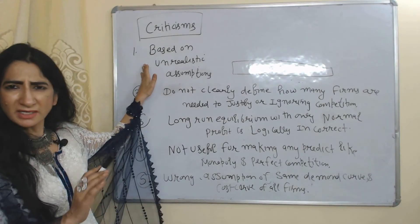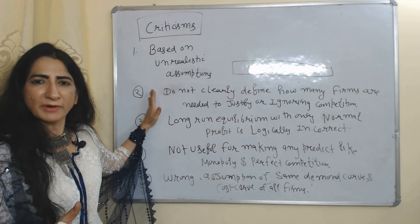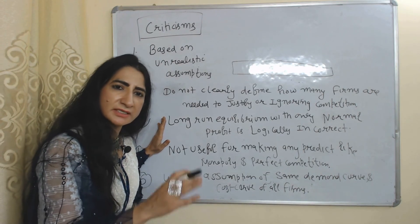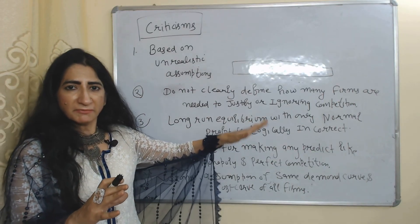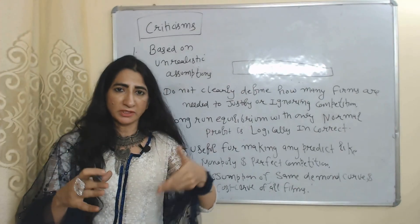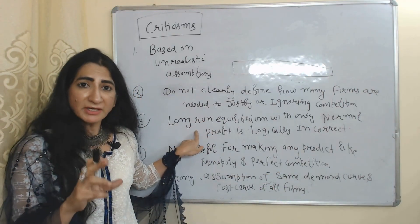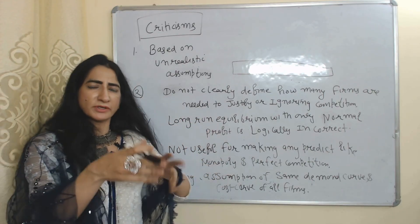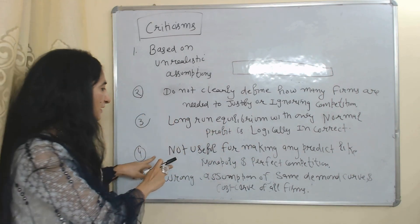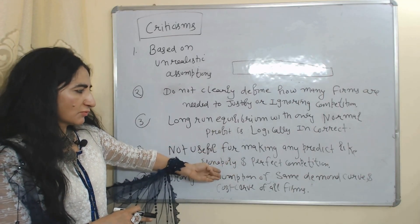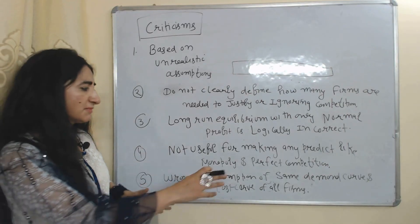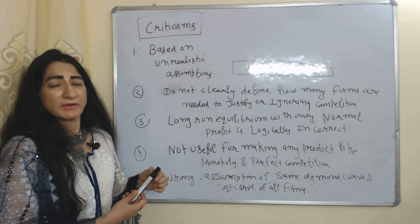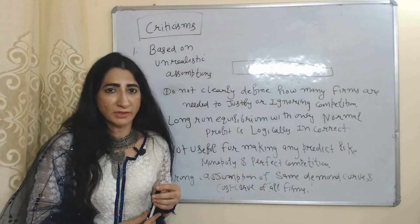Criticisms of this model include: it is based on unrealistic assumptions; it does not clearly define how many firms are needed to justify ignoring competition; it assumes that monopolistic competition firms always earn normal profit at long run, but if they have a monopoly element, they could potentially earn supernormal profit in the long run — which makes this assumption logically incorrect; it is not useful for making predictions like monopoly or perfect competition models; and it assumes identical demand and cost curves for all firms, which is also unrealistic.